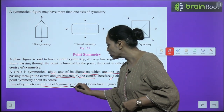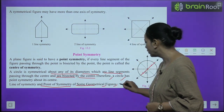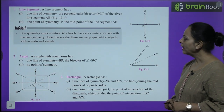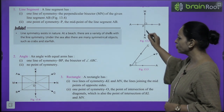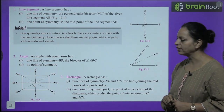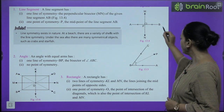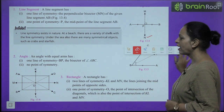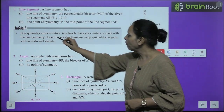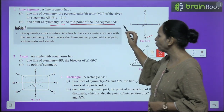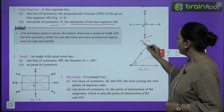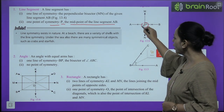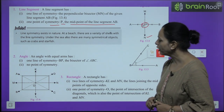Now let us look at the line of symmetry and point of symmetry of some geometrical figures. The first one is a line segment. A line segment has one line of symmetry — the perpendicular bisector. Suppose we have line AB: the perpendicular bisector of AB is the line of symmetry, and the midpoint P of AB is the point of symmetry, where the line is divided into equal parts.